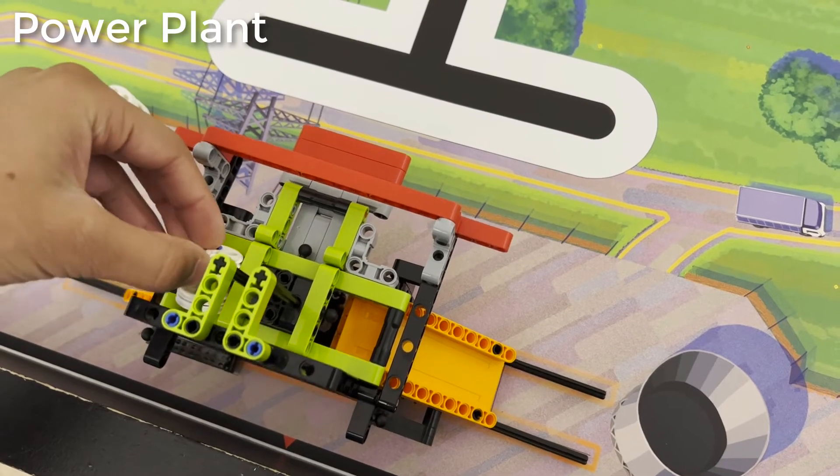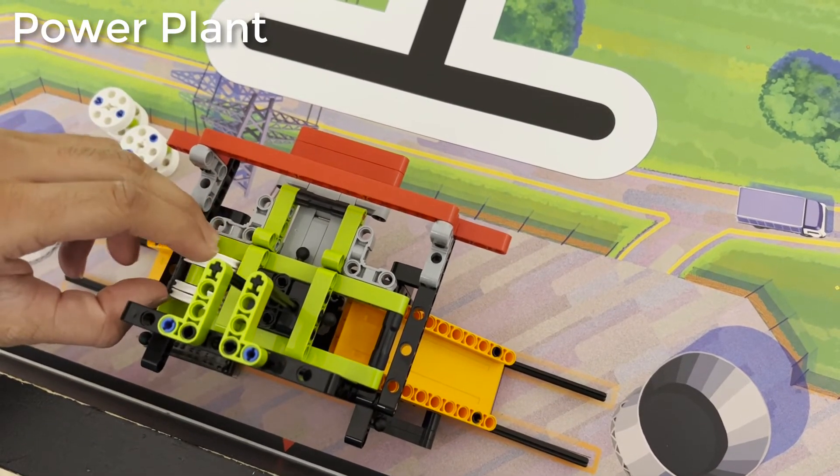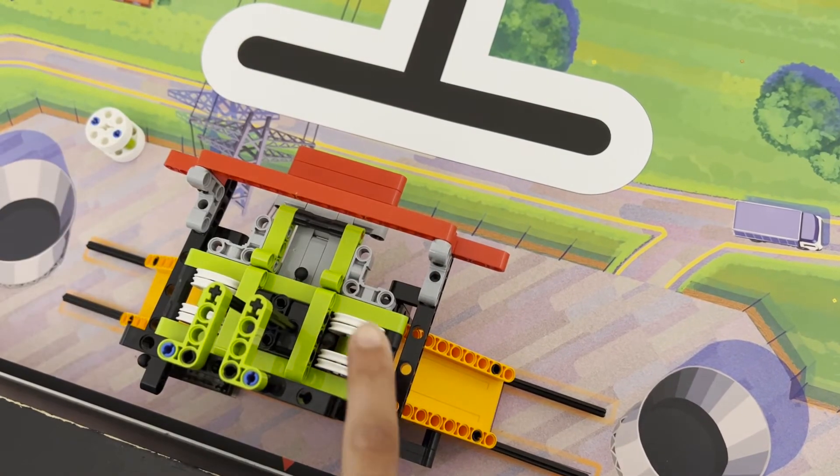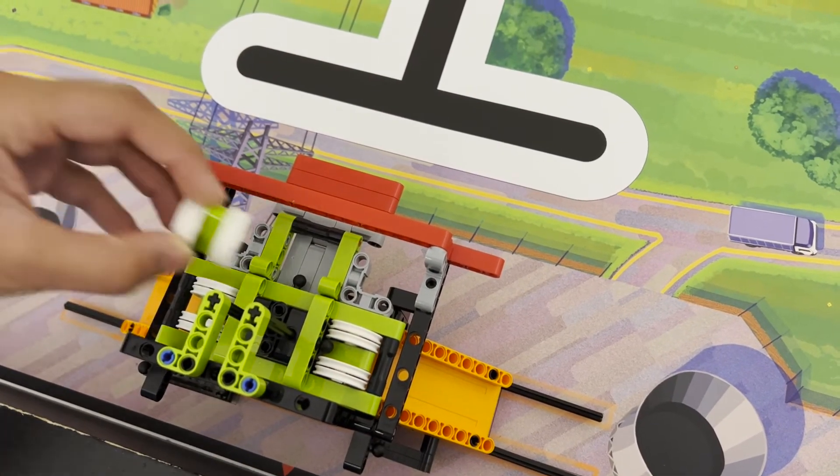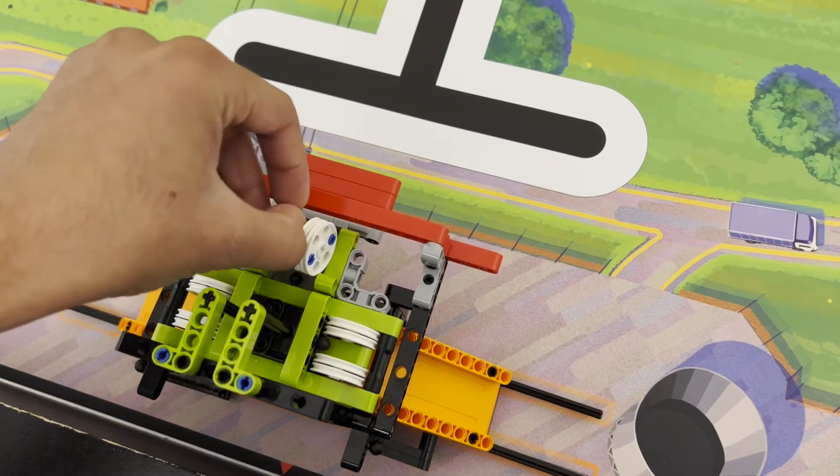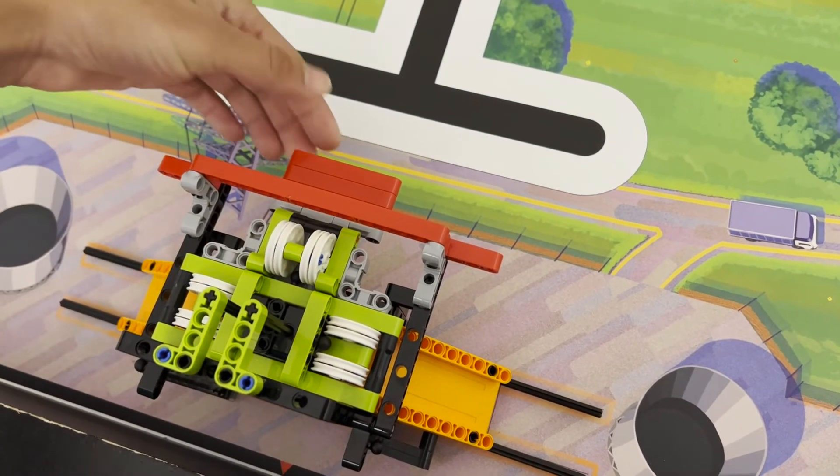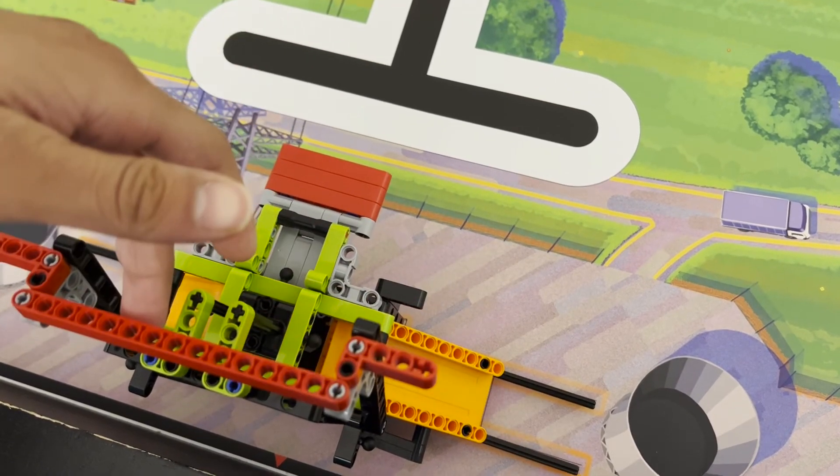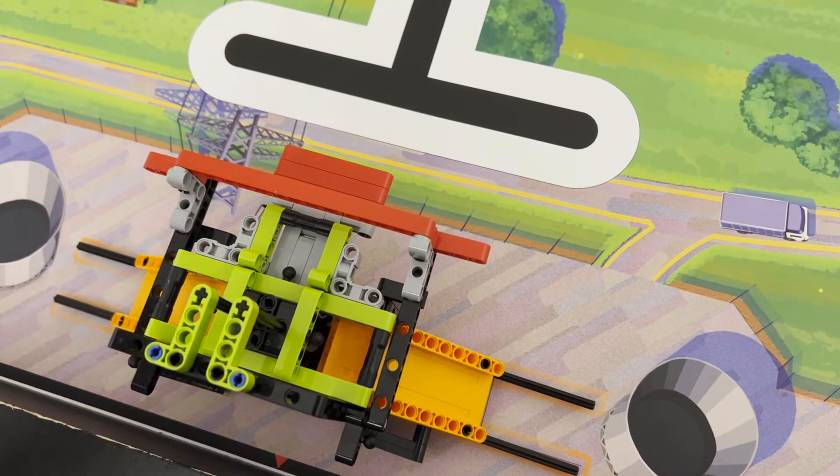Load three energy units into the power plant. Press the red lever to release them. Only one falls out. What happens when you raise the red lift arm?